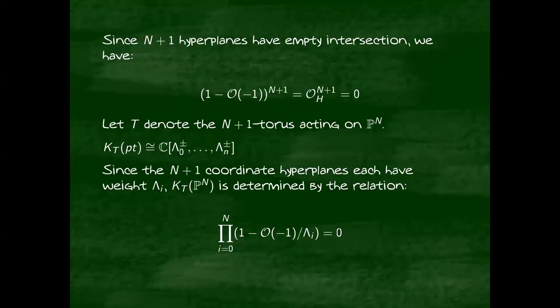What that means is we have an equality in the K-theory ring, where the structure sheaf of a hyperplane is 1 minus the tautological bundle O(-1). And now we can use this to get some other non-trivial relations in the K-ring.